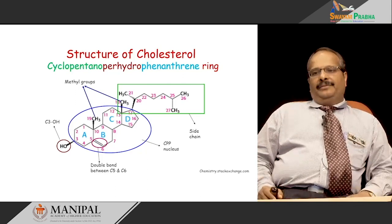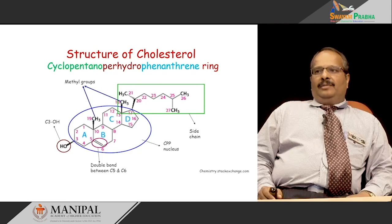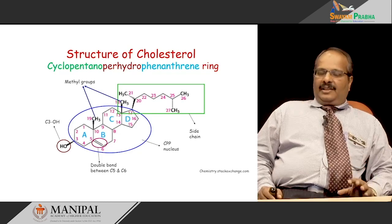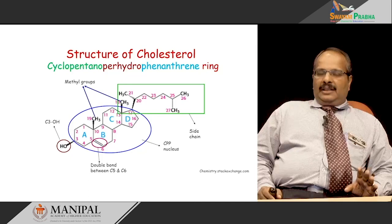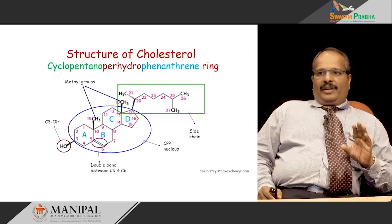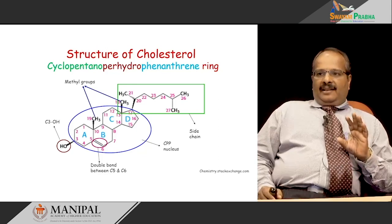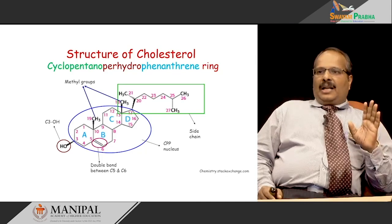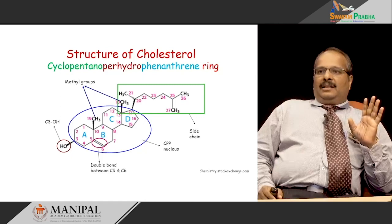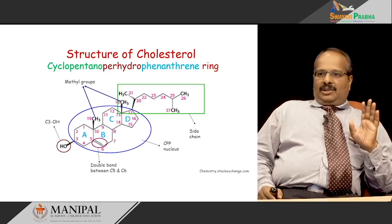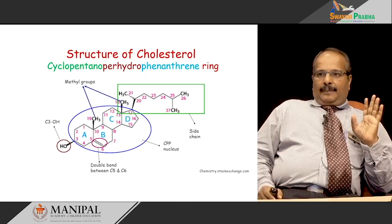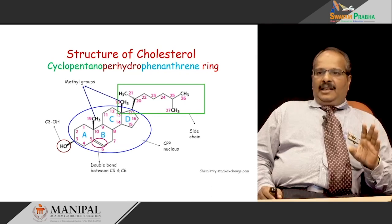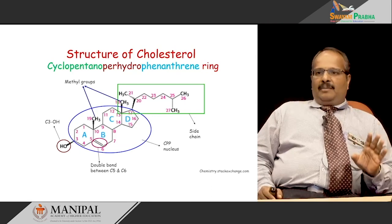This is a brief account on the structure of cholesterol. The ring structure is known as cyclopentano-perhydro-phenanthrene ring, because A, B, C are the phenanthrene rings and D is the cyclopentane ring. The hydroxyl group is present at the third position, the 8-carbon side chain is attached to carbon atom 17, methyl groups are present at carbon atoms 18 and 19, and there is a double bond at positions 5 and 6.